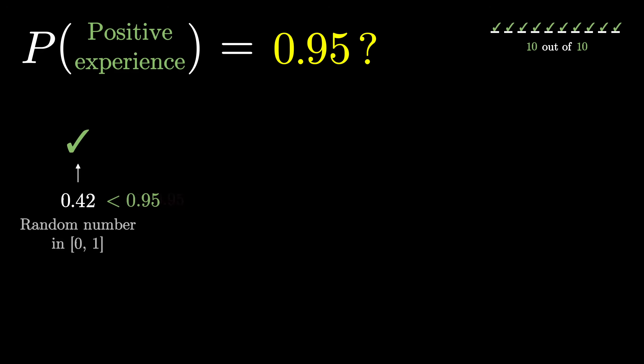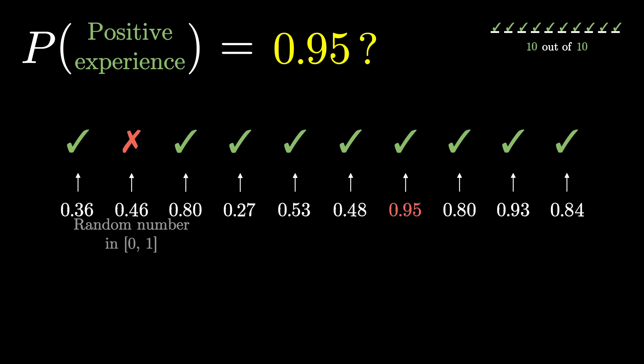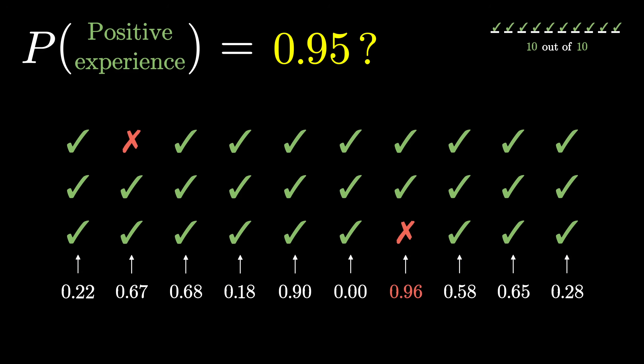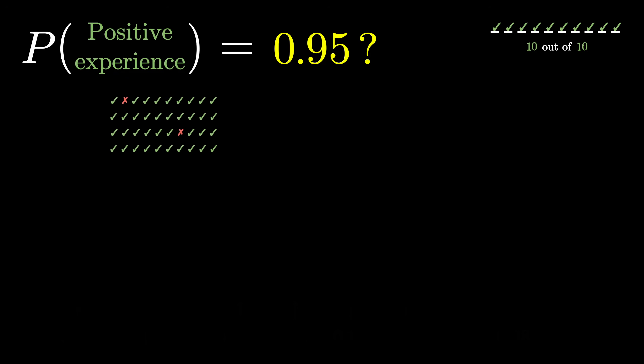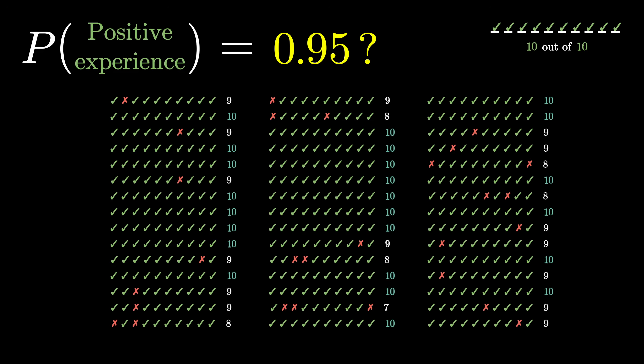Now do this 10 times in a row, and then make 10 more, and 10 more, and 10 more, and so on, to get a sense of what sequences of 10 reviews for a seller with this success rate, 0.95, would tend to look like.